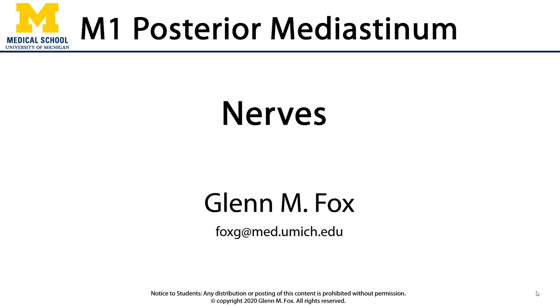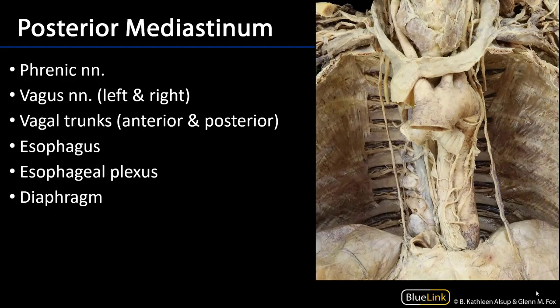Let's look at the nerves of the posterior mediastinum. One of the first differentiations you're going to want to make is between the phrenic nerves and the vagus nerves. This is an easy one if you remember the relationships at the root of the neck. The phrenic nerves are going to be much more lateral, both at the root of the neck as well as in the posterior mediastinum.